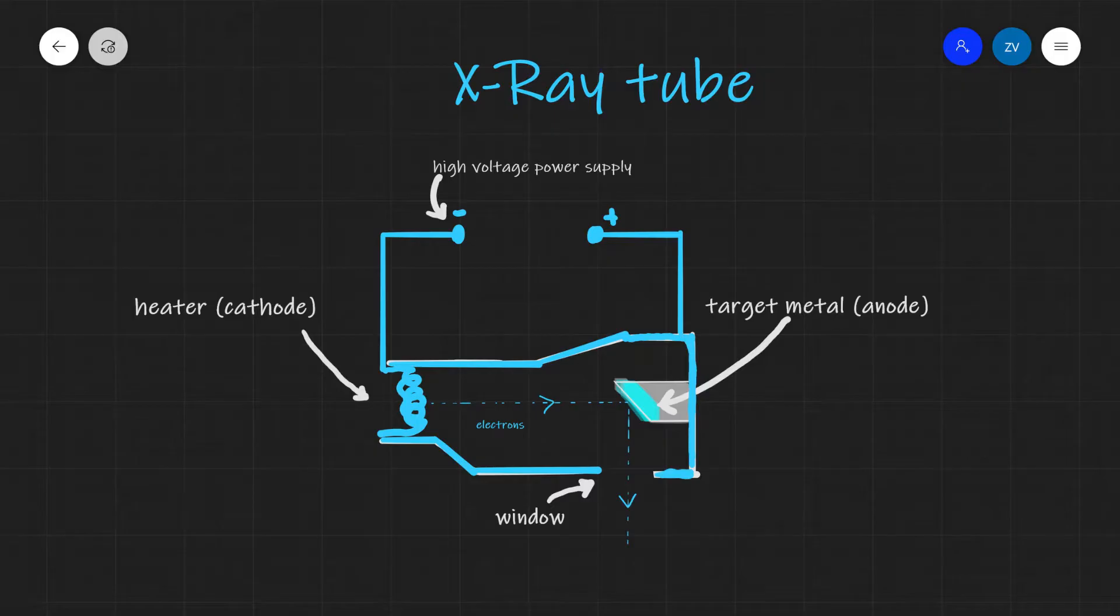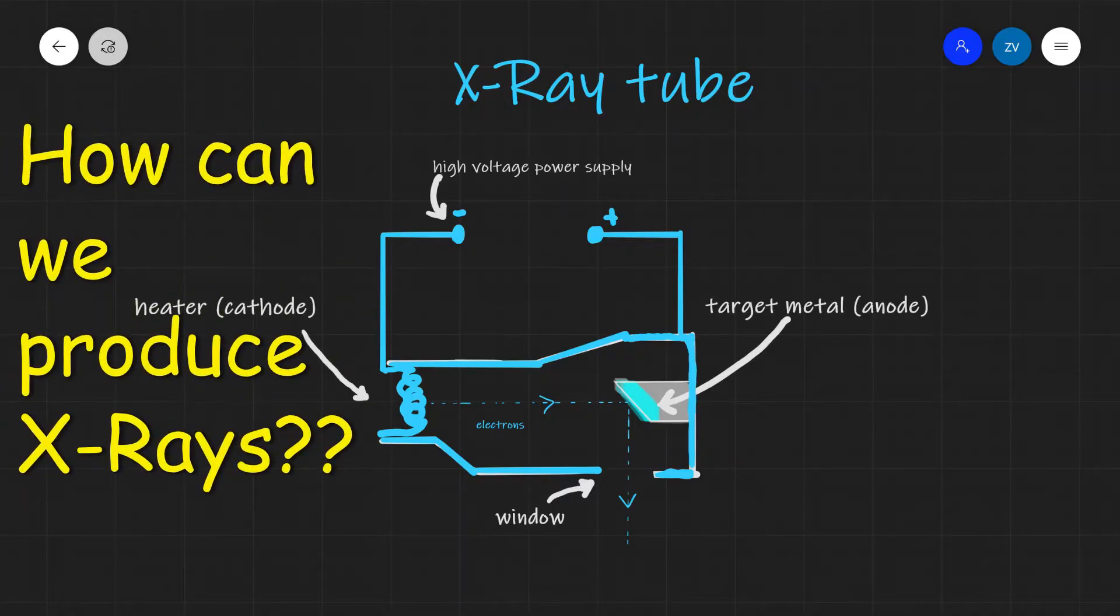As we know, x-rays are highly energetic electromagnetic radiation. They are extensively used in medicine, but how can we actually produce x-rays? Well, let's explain that.